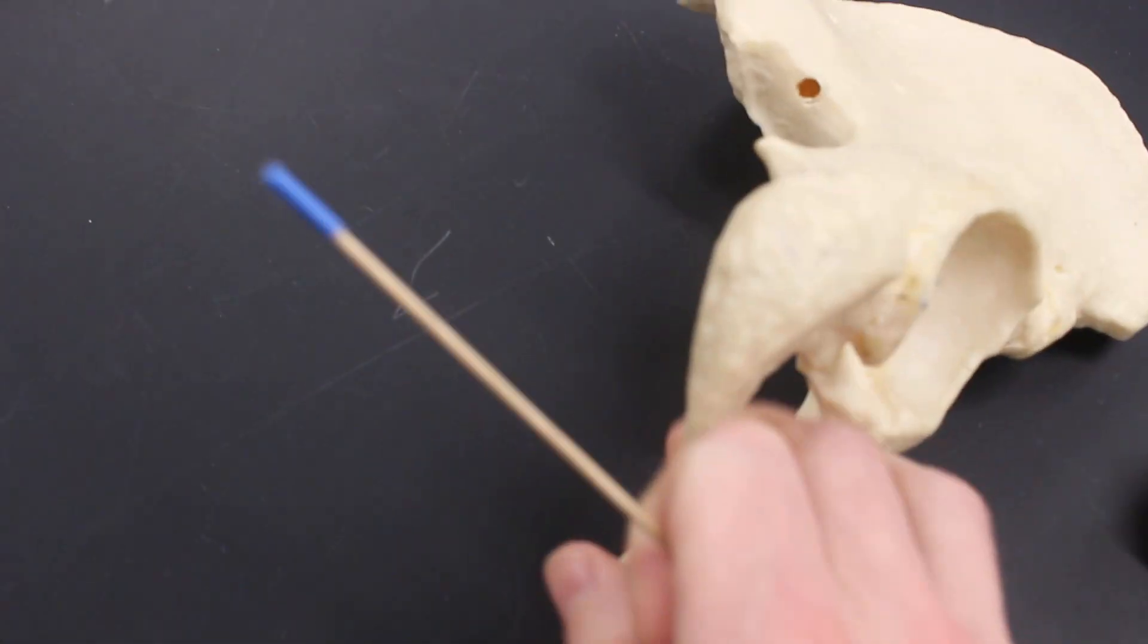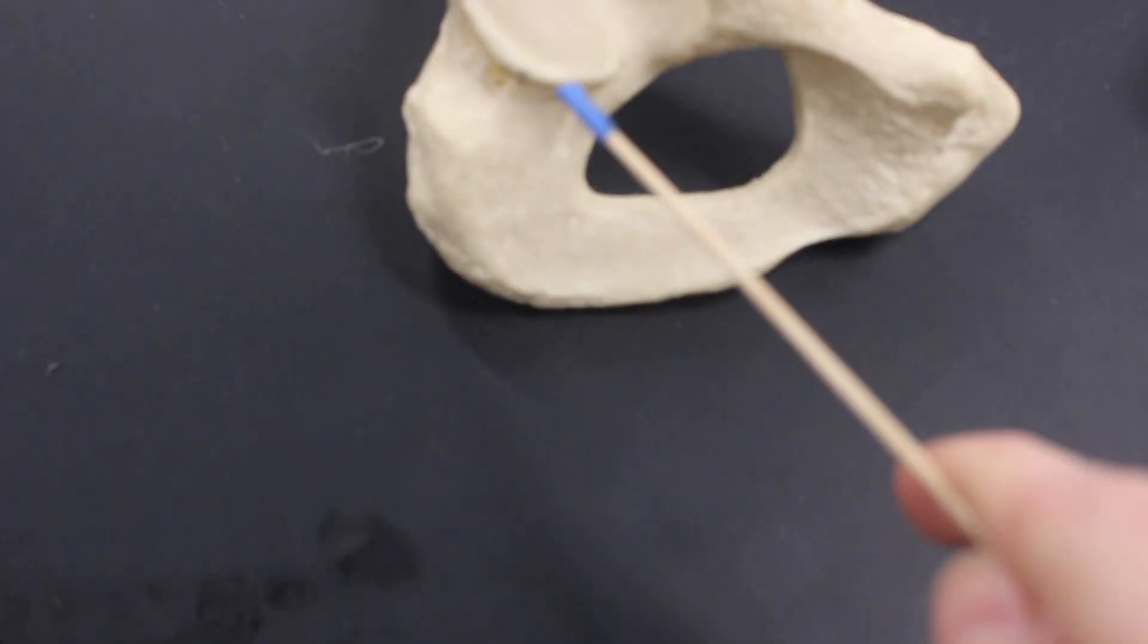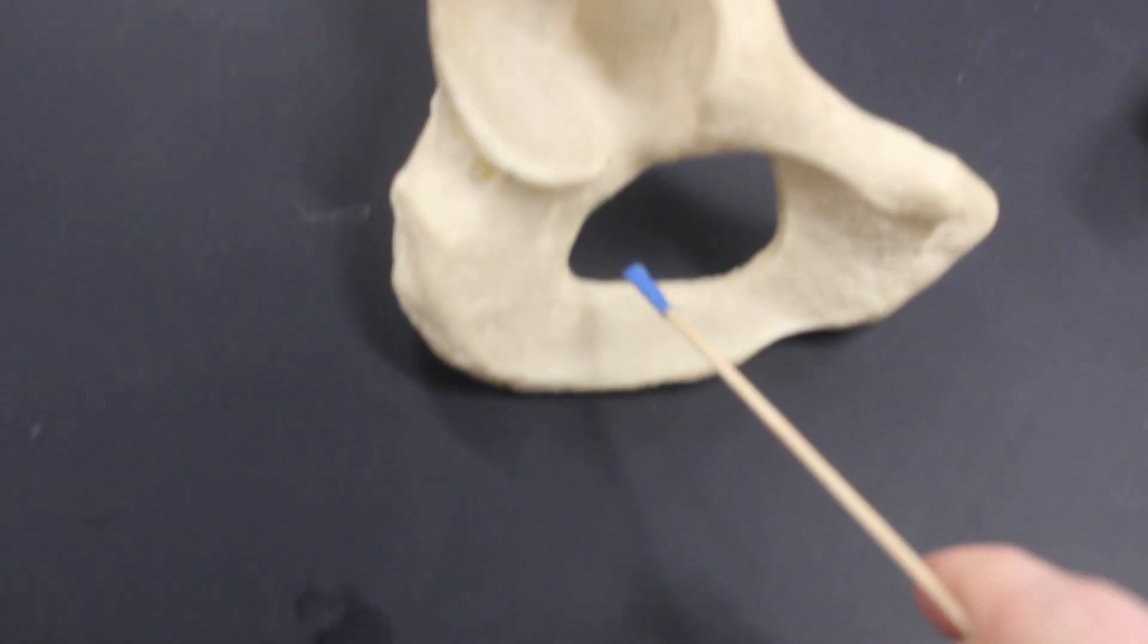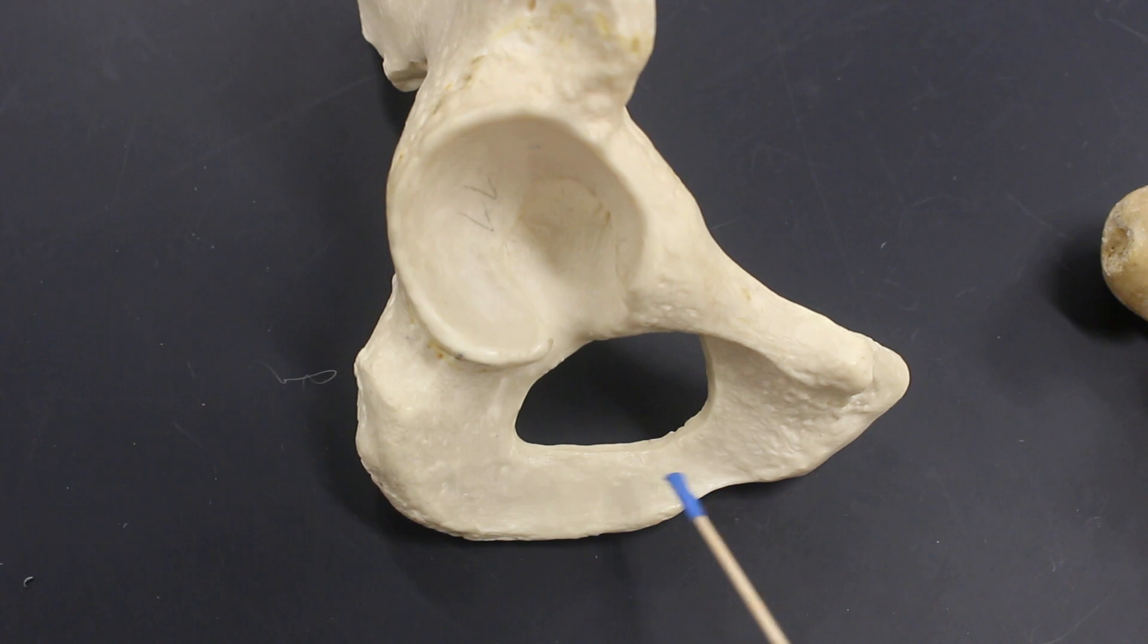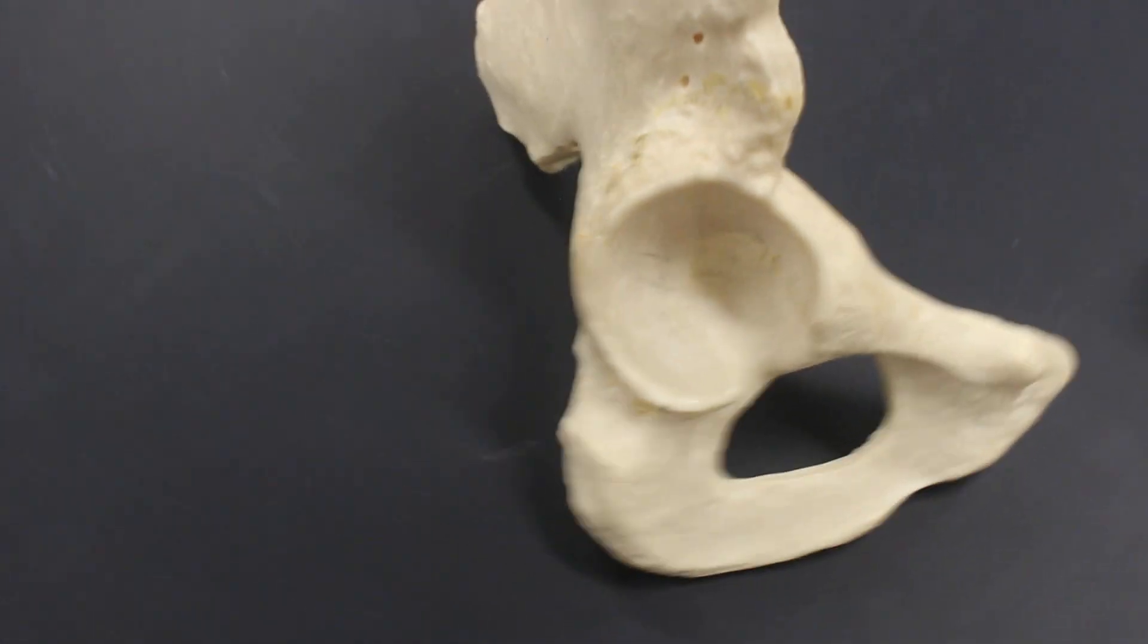The posterior region here is the ischium, so this is the ischium. And the anterior region here is the pubis, so that is the pubis.